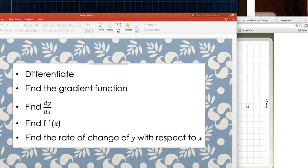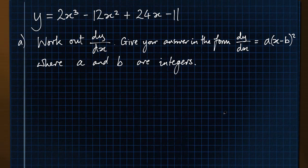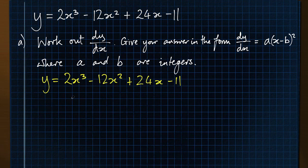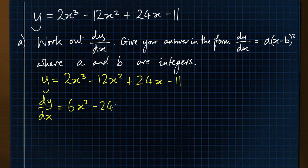We'll look at this in the context of an exam question. The question gives the function y equals 2x cubed minus 12x squared plus 24x minus 11, and asks to work out dy by dx — effectively just saying differentiate — and to give the answer in the form dy by dx equals a times x minus b squared, where a and b are integers. First, write out the function clearly to avoid copying errors, then differentiate: dy by dx gives 3 times 2 is 6x squared, minus 2 times 12 is 24x, plus 24. That's the differentiated version.